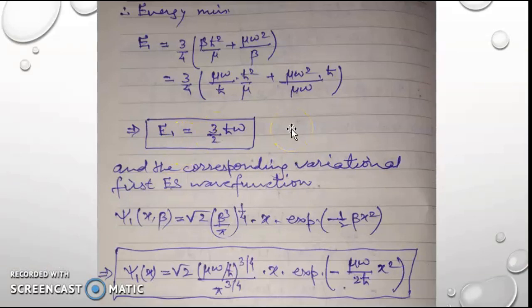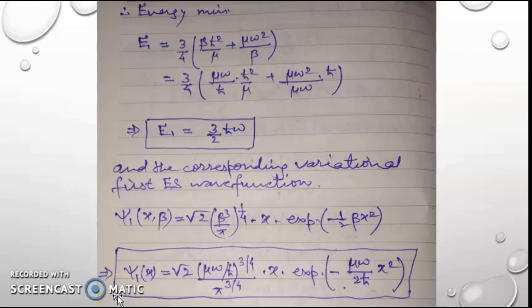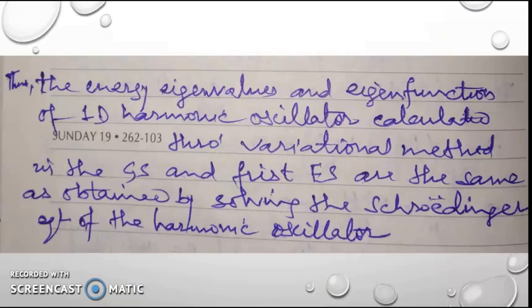Using this value of β in the expression for E₁, we get the minimum energy E₁ = (3/2)ℏω. The corresponding variational first excited state wave function, after substituting the values of β and c₂, gives us the expression for ψ₁, the wave function in the first excited state of the one-dimensional linear harmonic oscillator. Thus, the energy eigenvalues and eigenfunctions calculated through the variational method in the ground state and the first excited state are the same as obtained by solving the Schrödinger equation of the harmonic oscillator.